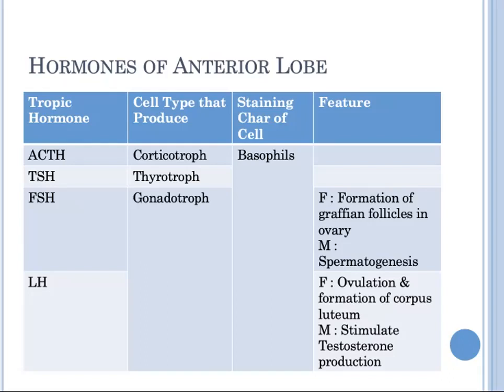Corticotropes, thyrotropes, and gonadotropes are basophils. Corticotropes produce adrenocorticotropic hormone (ACTH), pro-opiomelanocortin (POMC), and melanocyte-stimulating hormone. Thyrotropes produce thyroid-stimulating hormone. Gonadotropes produce follicle-stimulating hormone (FSH) and luteinizing hormone (LH). In women, FSH stimulates the formation of Graafian follicles in the ovary, and LH induces ovulation and formation of corpora lutea. Both FSH and LH regulate spermatogenesis and testosterone production in males.